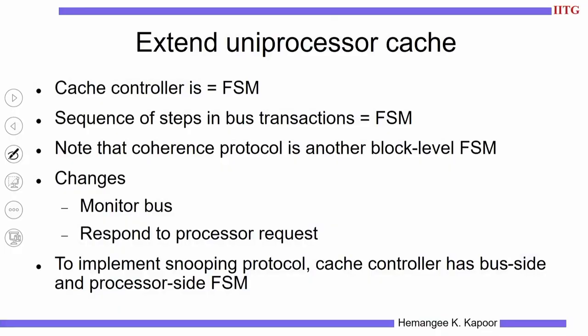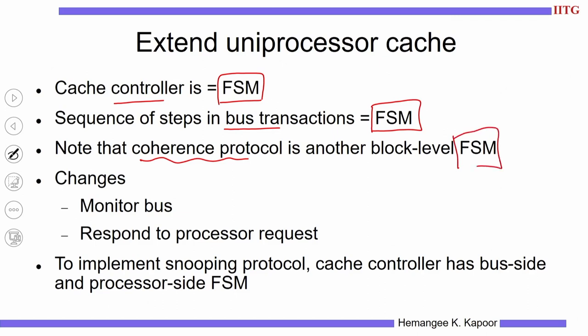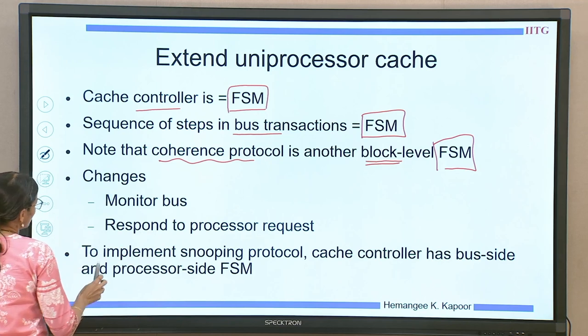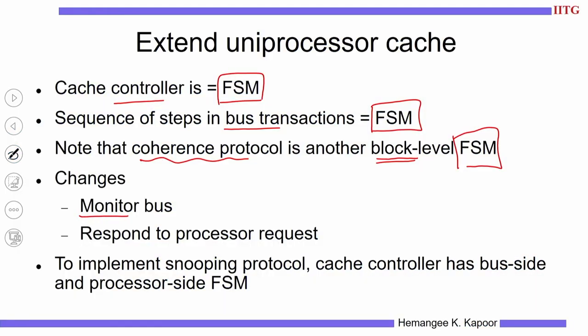We are going to extend the uniprocessor cache, which is implemented as a finite state machine. The bus transactions also form an FSM, and the processor-side interactions form another FSM. Don't confuse these with the coherence protocol FSM, which is a block-level FSM for every cache block. So overall there are three FSMs we are considering: processor-side, bus-side, and block-level coherence.